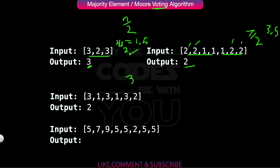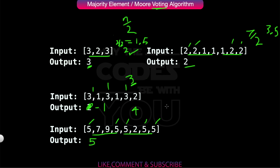In the array [3, 1, 3, 1, 3, 2], the element 3 is the highest occurring but it is not greater than 3, since n/2 = 3 and the count must be strictly greater. So the output will be -1. For another example with 8 elements, n/2 = 4, so we need at least 5 occurrences. The element 5 occurs more than 4 times, so 5 is our majority element.